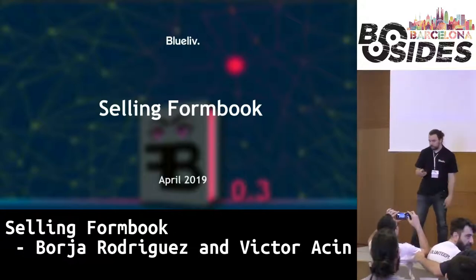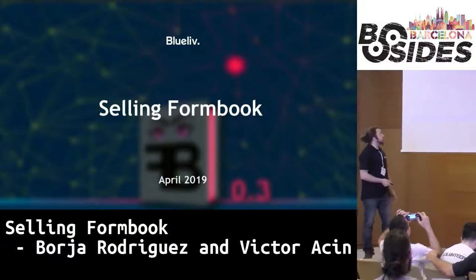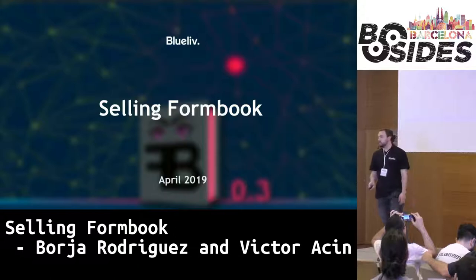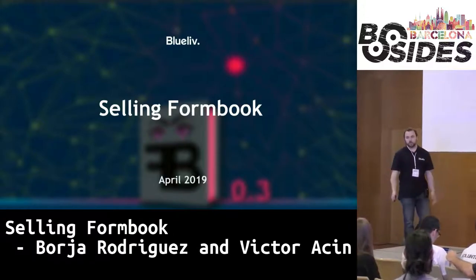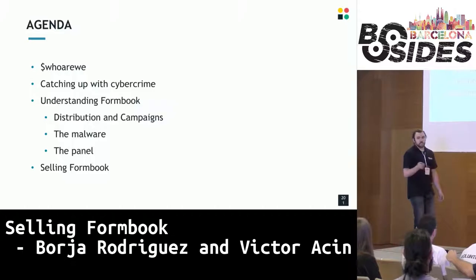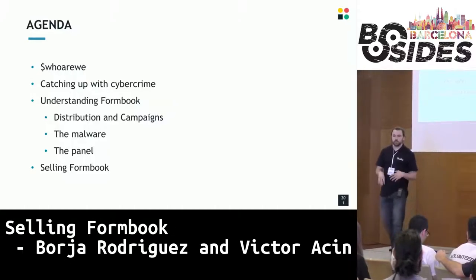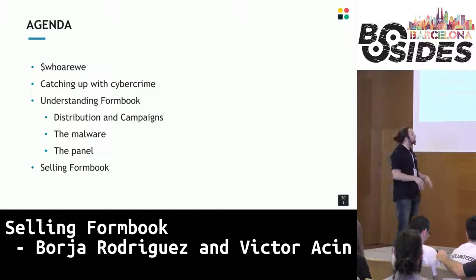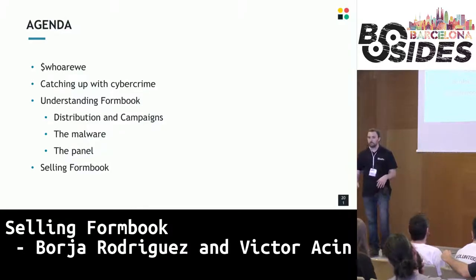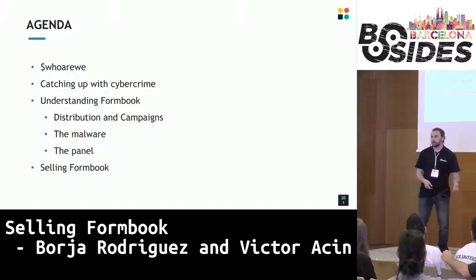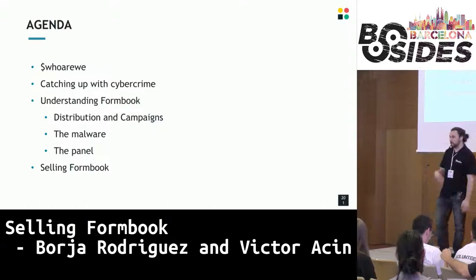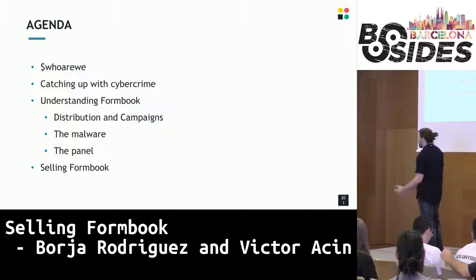Today we want to talk to you about a piece of malware called Formbook, which we will try to showcase as a good example of what we believe is cybercrime and the cybercrime industry — how it works, what it does, and how it does what it does. We will introduce ourselves, give a brief overview of the current state of cybercrime, then overview the malware sample, its distribution, the panel, how it works, the tricks it has, and afterwards talk about the threat actor behind this malware — the developer who made it and his history with it.